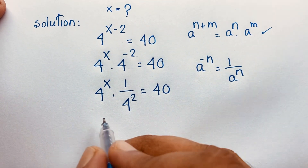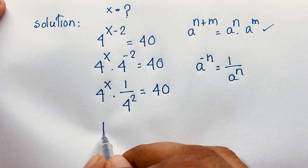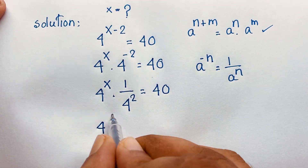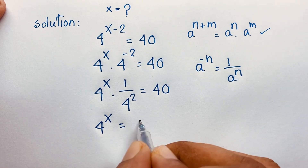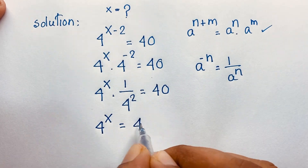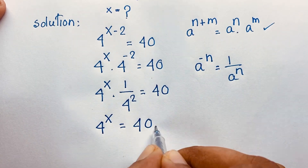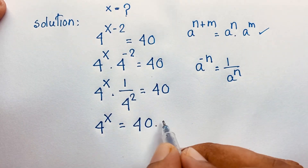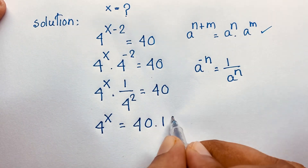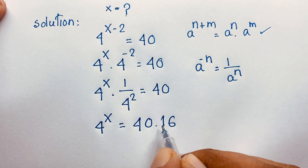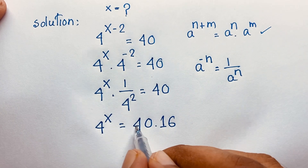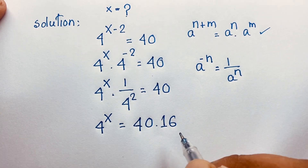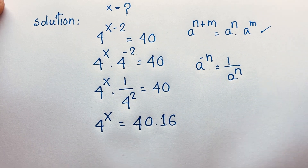Now, 4 to the power x is equal to 40 times 4 to the power 2, which is 16. So we have to find 4 to the power x is equal to 40 times 16.